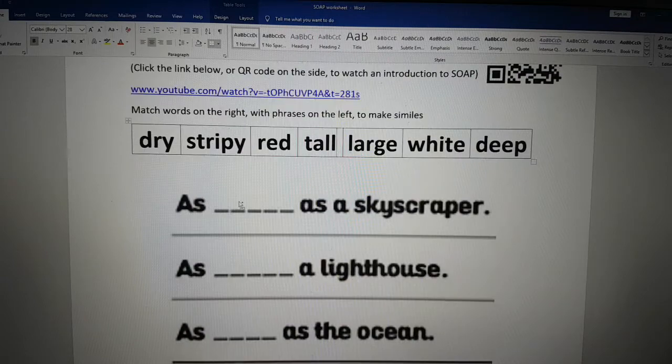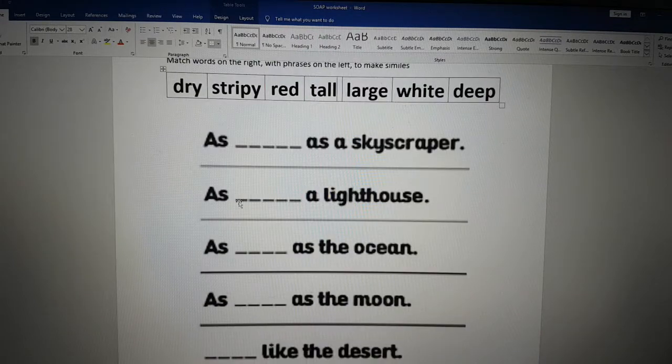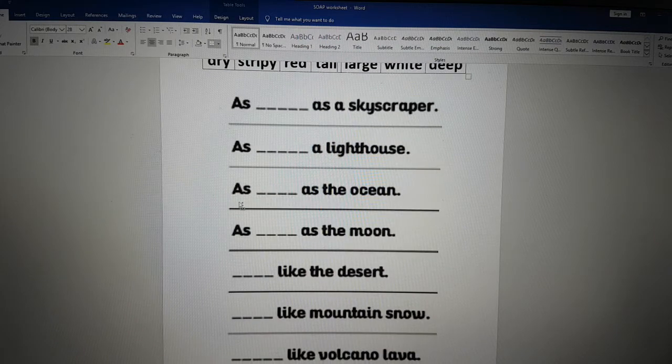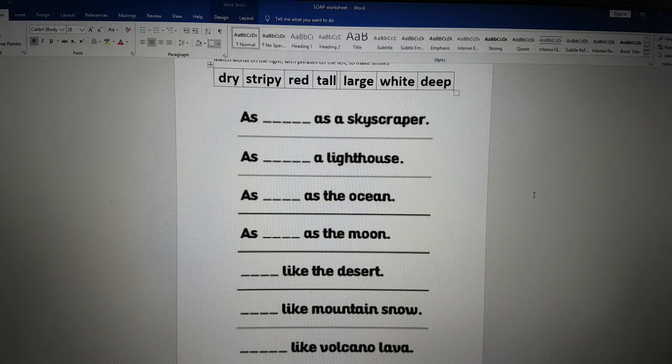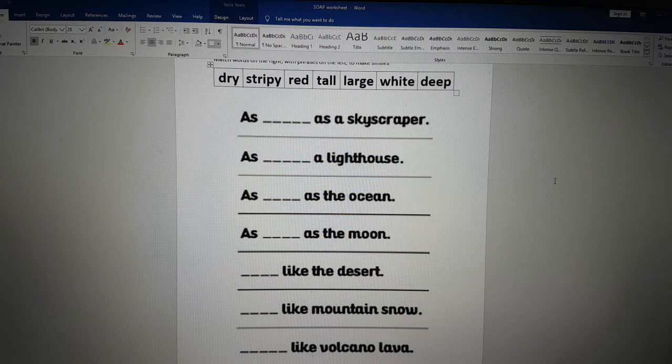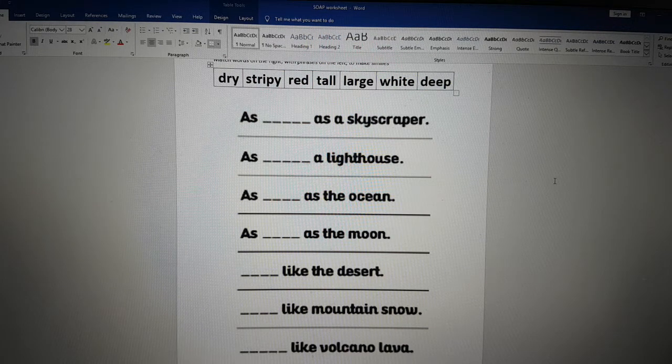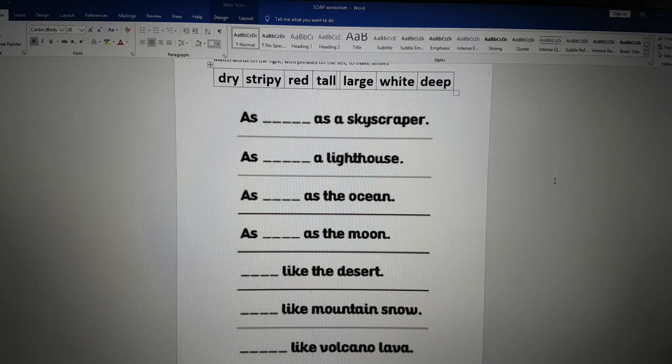As something like mountain snow and something like volcano lava. If we zoom out, we can see all the words together on one screen. And then maybe you will be able to get the answers correct. So take some time to pause this video and then we'll come back with the answers. Pause it now, please.